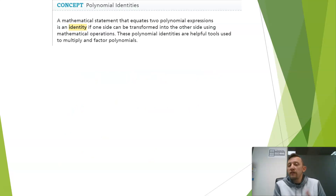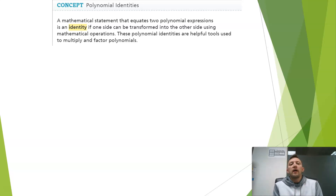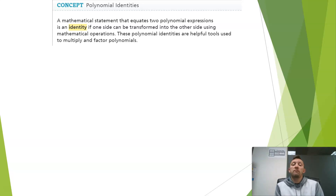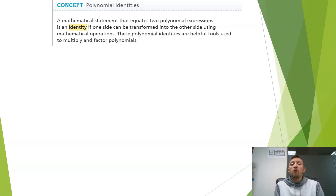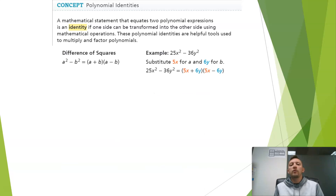You don't have to write this paragraph in your notes — it's just identifying what an identity is. All it's saying is that we're going to use identities, which are basically rules to help us simplify or factor different polynomials. I'm going to give you some tricks that the book won't give you. Let's start with a difference of squares.